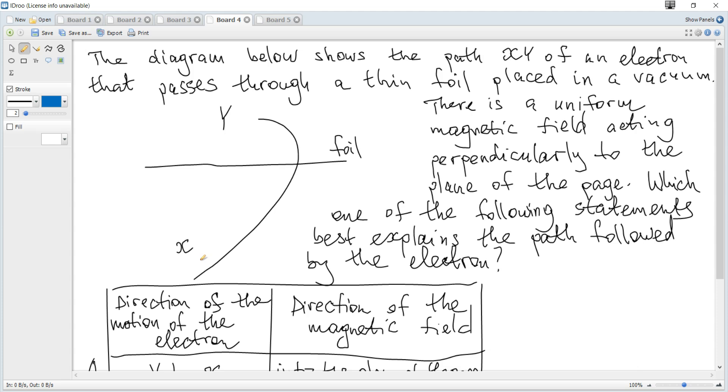The diagram below shows the path XY of an electron that passes through a thin foil placed in a vacuum. There is a uniform magnetic field acting perpendicularly to the plane of the page. Which one of the following statements best explains the path followed by the electron?